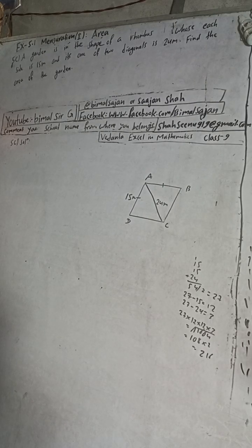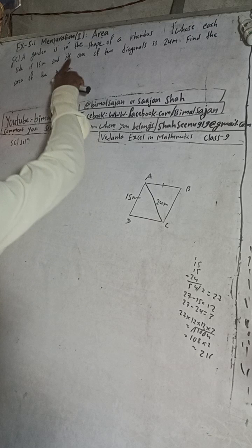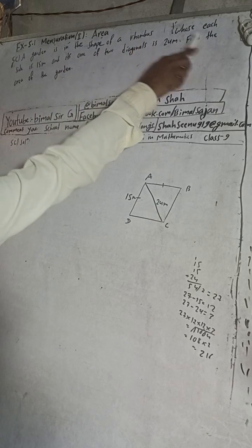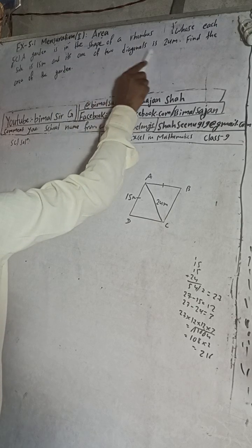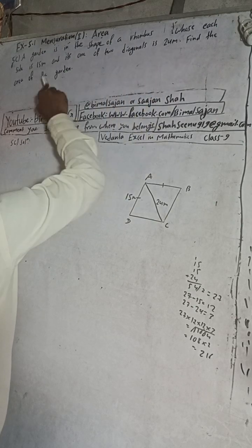Hi class 9 and 10 students, welcome back to Bimal Sarji YouTube channel. This is question number 5c, exercise 5.1, mensuration, first part area. The question is: a garden is in the shape of a rhombus whose each side is 15 meters and one of its two diagonals is 24 meters. Find the area of the garden.